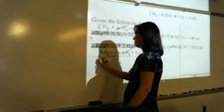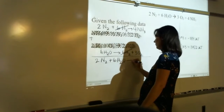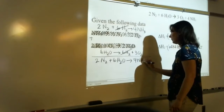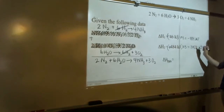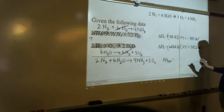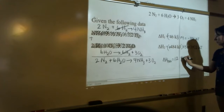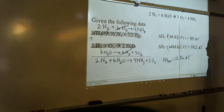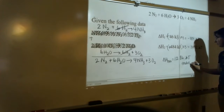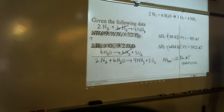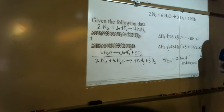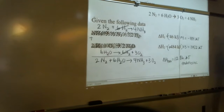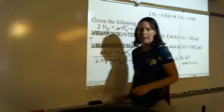After cancellation, we're left with 2N₂ + 6H₂O → 4NH₃ + 3O₂. Adding the delta H values: -184 + 1,452 = +1,268 kJ. Since delta H is positive, this reaction is endothermic — heat must go in. When delta H is negative, heat is being released (exothermic).